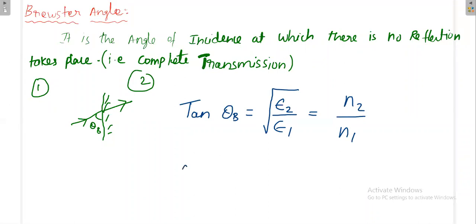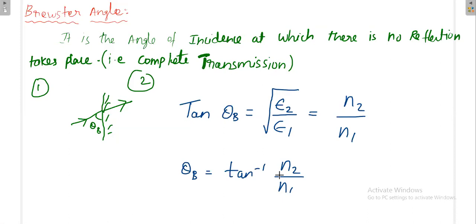From this, you can easily calculate theta B — Brewster's Angle — that is tan inverse of n2 divided by n1. Please remember: Snell's law is related with sine theta, while Brewster's Angle is related with tan theta. You should have that understanding — that is the key difference between Snell's law and Brewster's Angle.